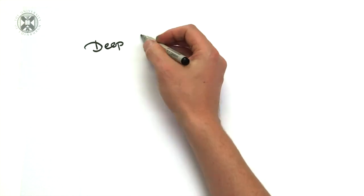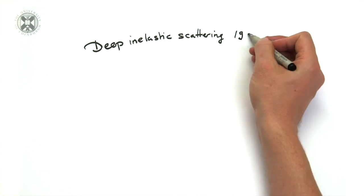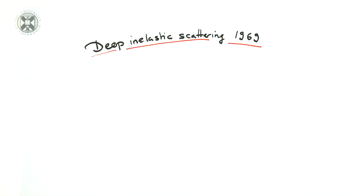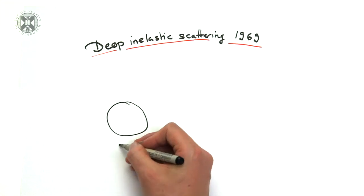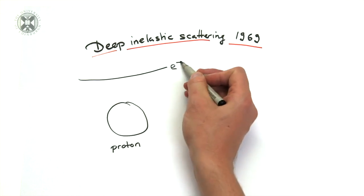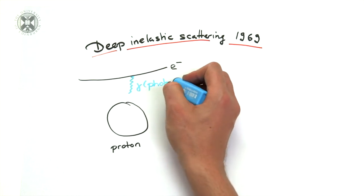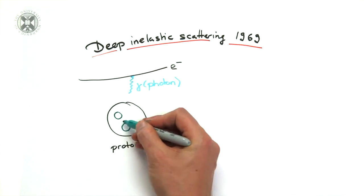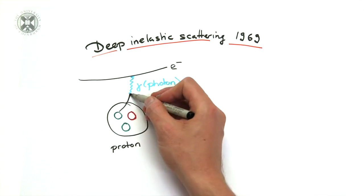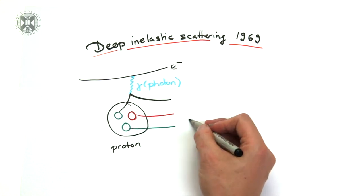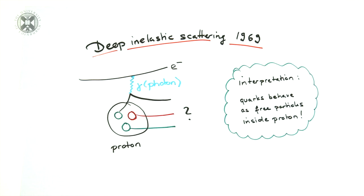In 1969 experiments in deep inelastic scattering gave the community new results. In those experiments energetic photons probed the proton. The best interpretation was that the quarks could be thought of as free particles within the proton. By free we mean that no force acts on them.